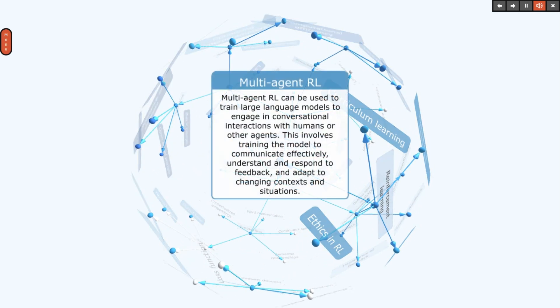Multi-agent RL can be used to train large language models to engage in conversational interactions with humans or other agents. This involves training the model to communicate effectively, understand and respond to feedback, and adapt to changing contexts and situations.